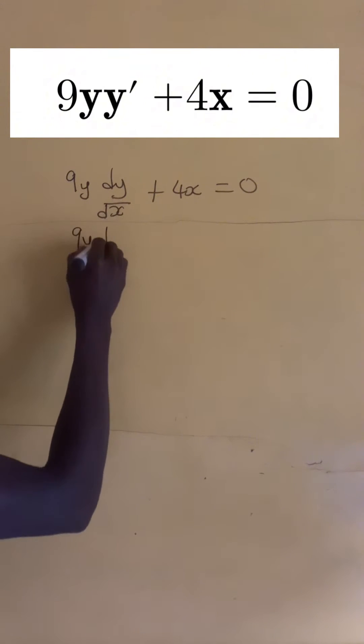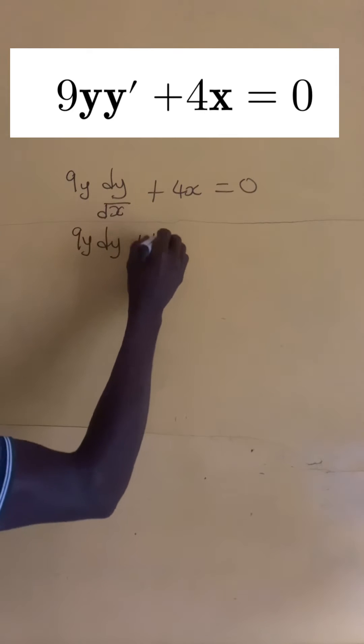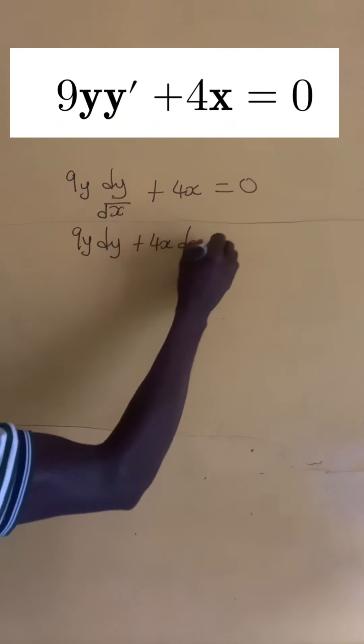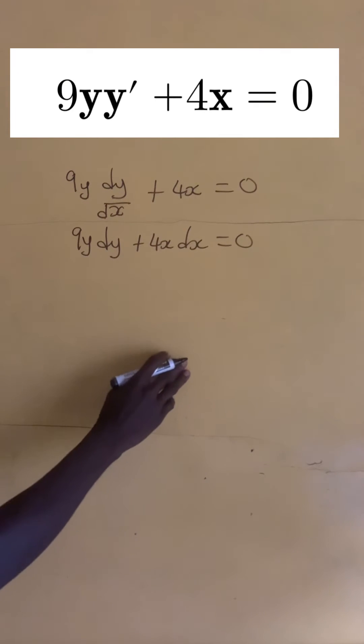Now if we multiply by dx, we have 9y dy plus 4x dx equals 0, since 0 times dx is 0.